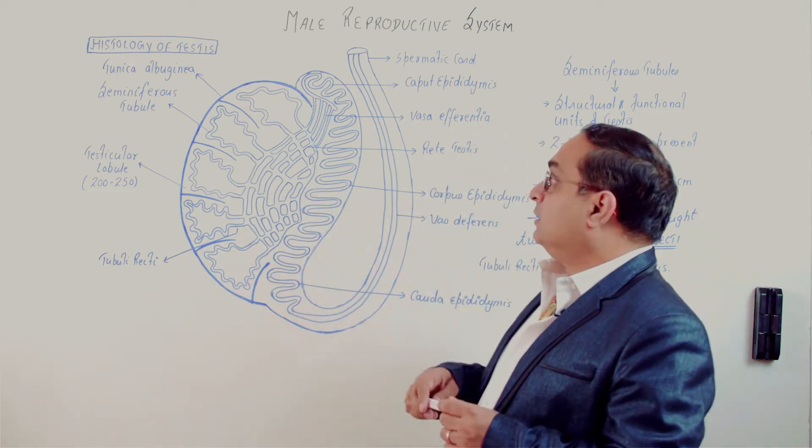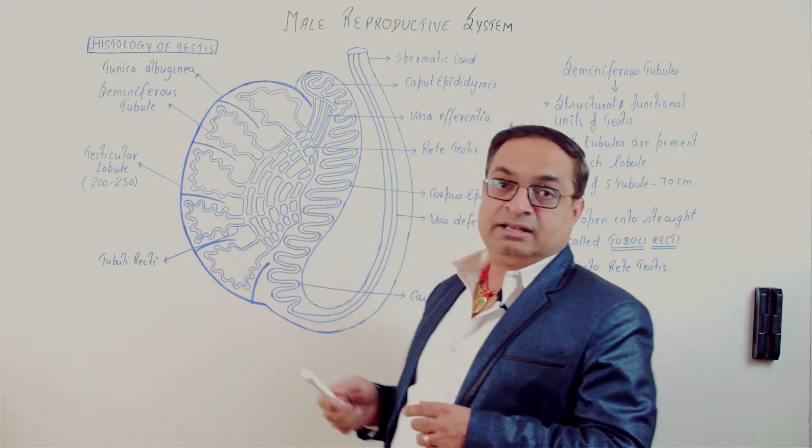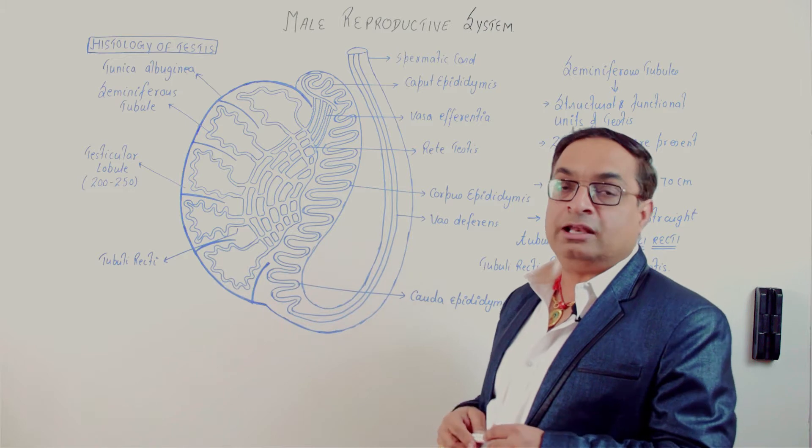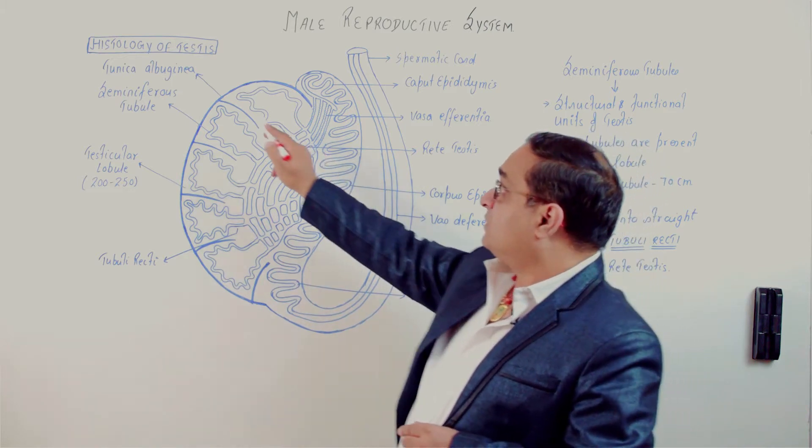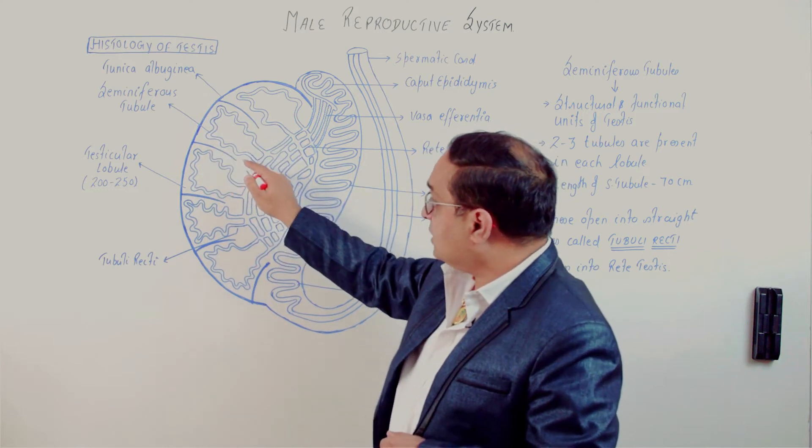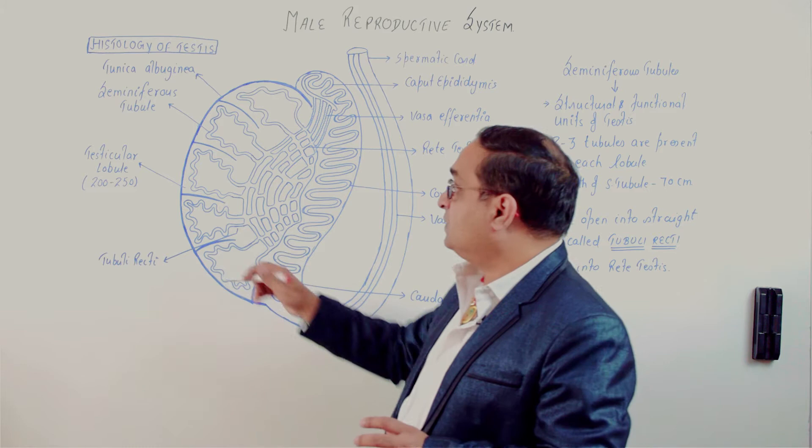Testes is covered by tunica albuginea, a connective tissue layer which covers each testis. At certain places you can see tunica albuginea enters into the testes and forms these partitions or chambers which are called testicular lobules.